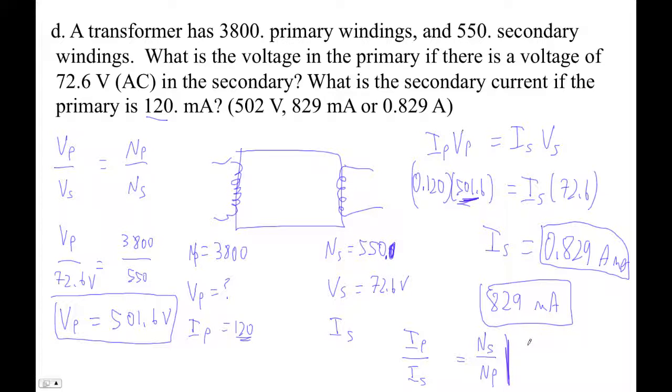So then I can go 120 milliamps is to I secondary as, let's see, this is upside down. So secondary is 550 over 3,800. Is that right? It works. I find this confusing. So let's see, 120 times 3,800 divided by 550 will give me my answer.